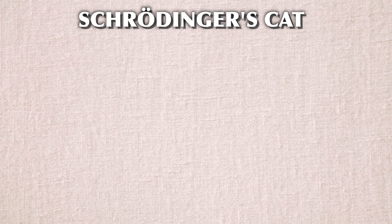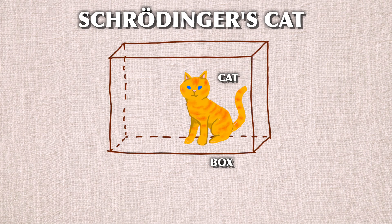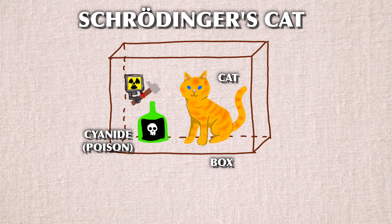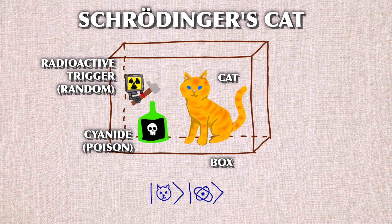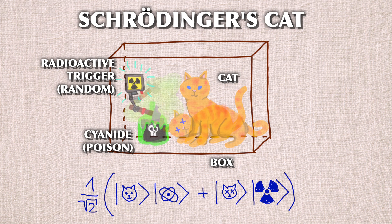In the original version, there was a cat in a box together with a container of cyanide that would or would not be broken, depending on whether a nucleus would randomly decay or not. So according to the quantum rules, you would get a cat in a superposition of being alive and being dead.